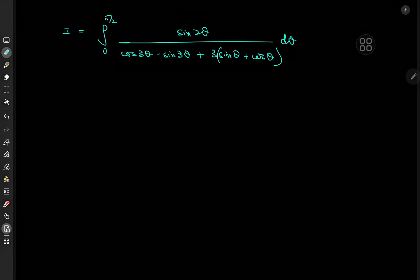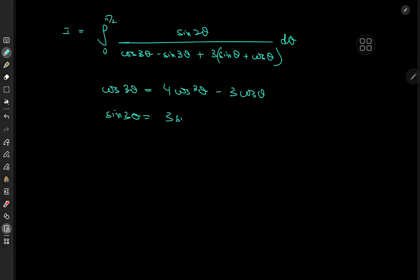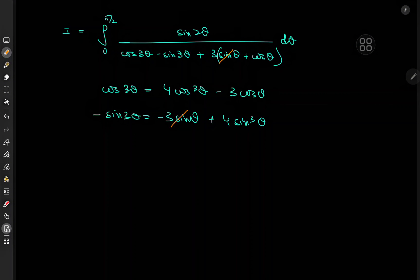The key observation is that cos(3θ) can be expanded as 4cos³θ − 3cosθ, and sin(3θ) can be expanded as 3sinθ − 4sin³θ. Since we have negative sin(3θ) in the denominator, the 3sinθ terms cancel out and the 3cosθ terms also cancel out, allowing us to simplify significantly.